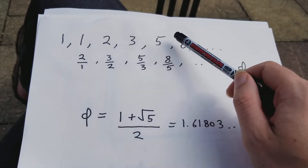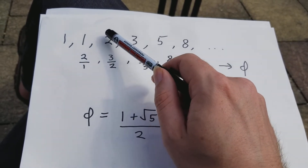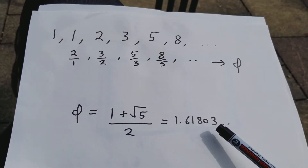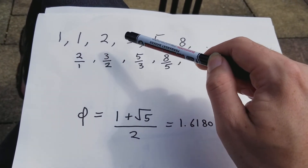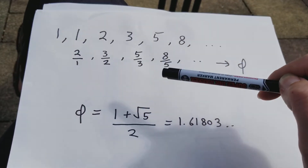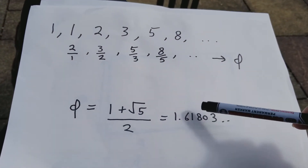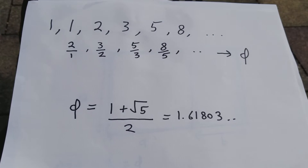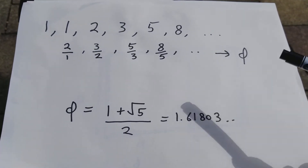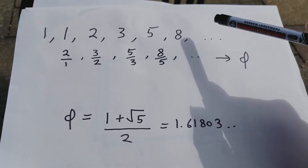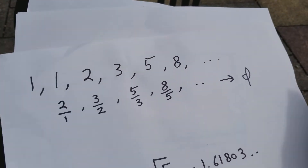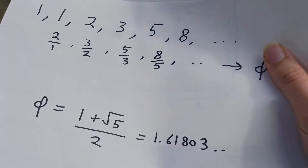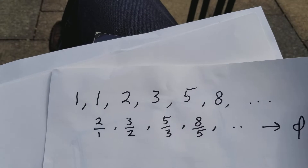We generate these Fibonacci numbers and divide consecutive ones. Say we divide 2 by 1 — that's kind of close to the golden ratio. But 3 over 2, which is 1.5, is even closer. And 5 divided by 3 is even closer, and so on. In the limit, as you go really far out, you converge on the golden ratio. So basically, when you're really far out, to find the next Fibonacci number you can multiply the current Fibonacci number by the golden ratio and it will be pretty close.